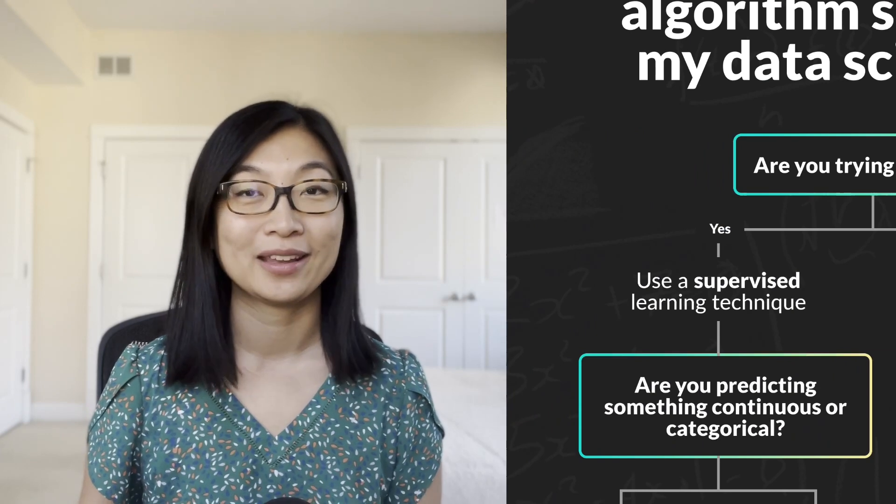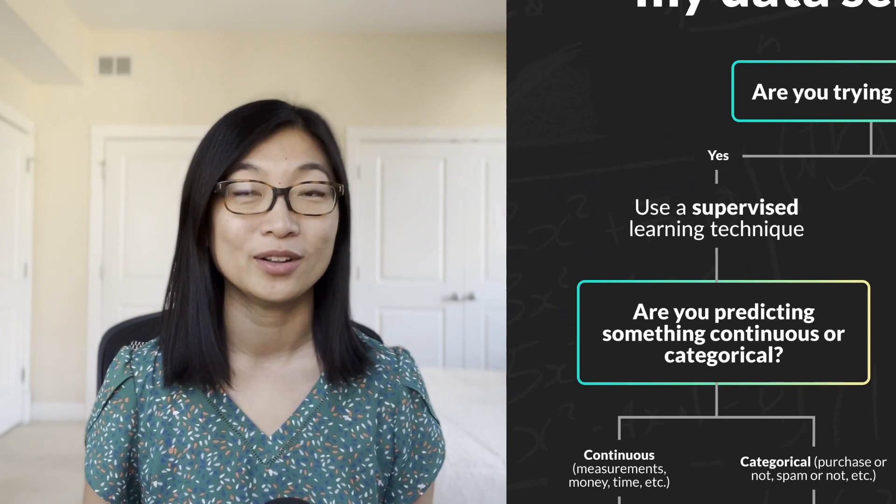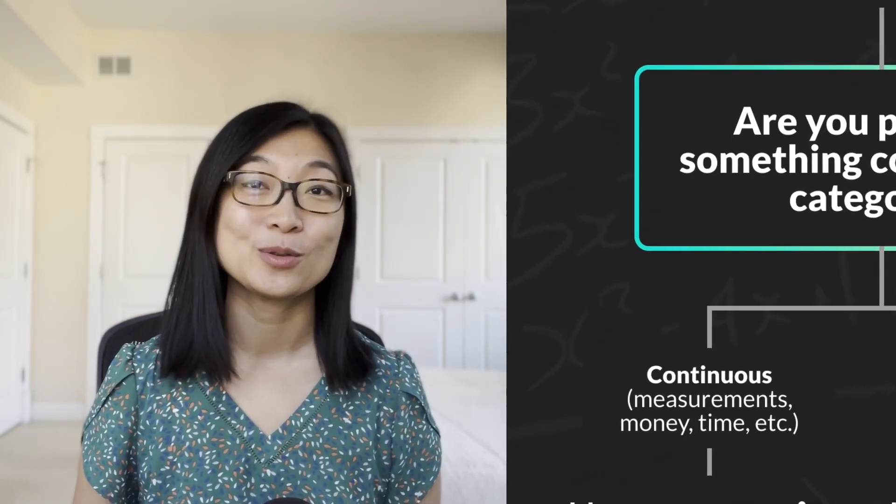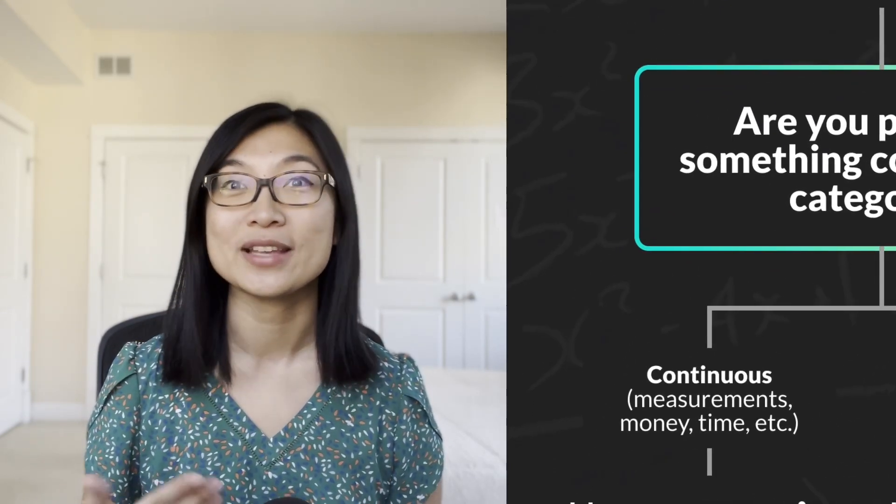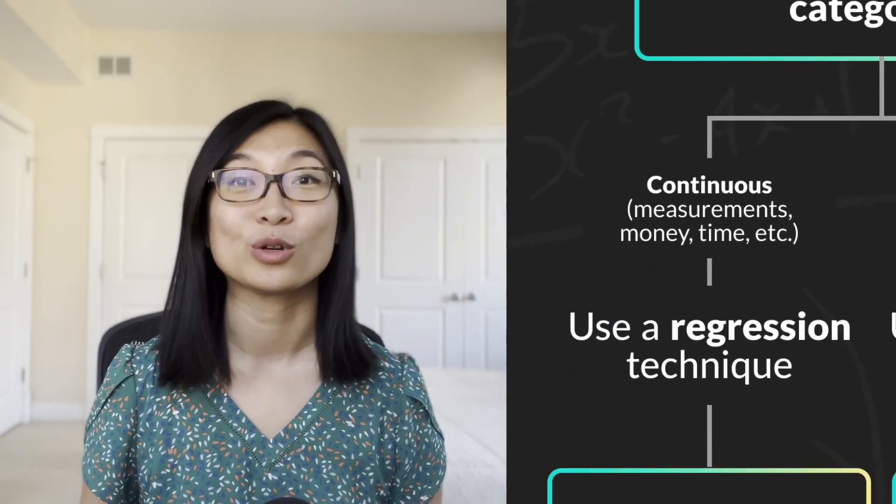Now let's say I'm going with a supervised learning approach. So I'm trying to predict something. Then the next question I'm going to ask myself is, am I trying to predict something continuous or categorical? If I'm trying to predict something continuous, so something with a wide range of values, such as house prices or number of sales, then in that case, I'm going to go with a regression algorithm.